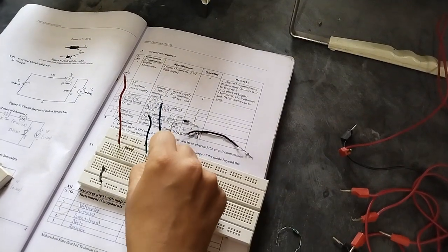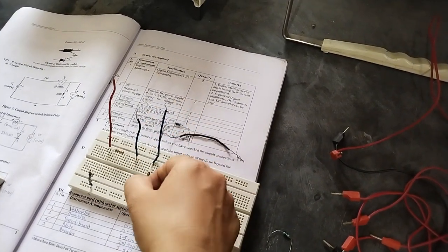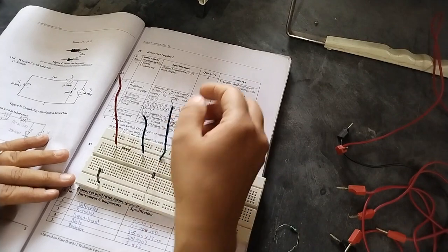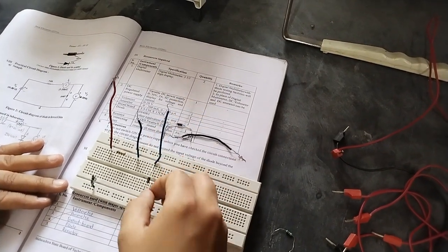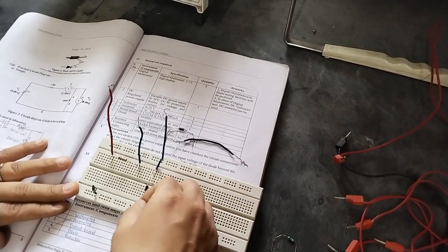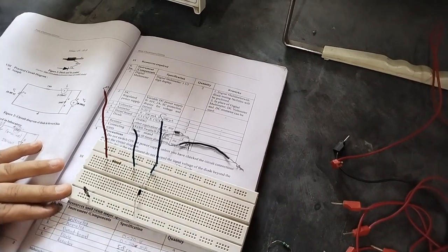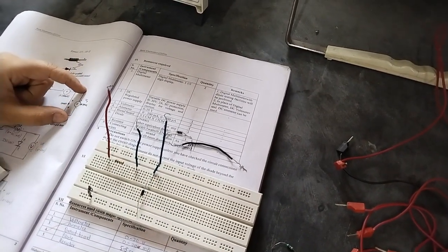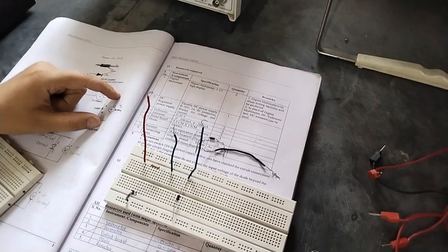So we are going to connect diode with this connector. So positive of the diode is connected to this particular connecting wire. This is called as single stranded wire. And negative is connected to common ground of the circuit. While we are going to connect voltmeter to these two terminals.